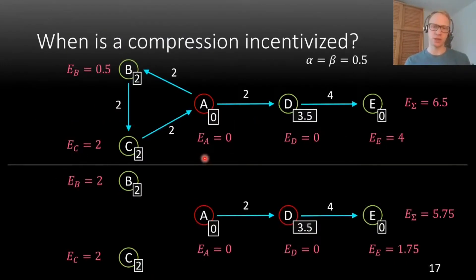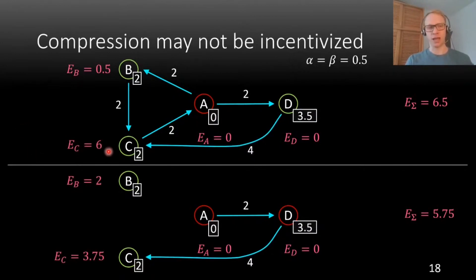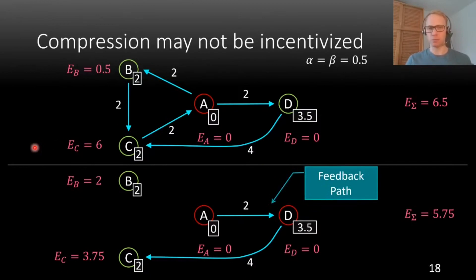Once more, going back to our example, we can use this insight to construct a financial system where compression is not incentivized. And what we do is we take this bank E that suffers from compression, and we take this bank C that is part of the compression but is indifferent, and we identify them to receive this financial system. Now, the equities here are just added up from before, and so bank C now has an equity of 6 before, after has an equity of 3.75, and so C would not agree to this compression and it's not incentivized. Interestingly, bank C would not agree at the cost of bank B, which actually has a lower equity here. So there's an interesting incentive misalignment here again. Of course, the feedback path we should now have is this one from A to D and back to C, which is the reason why C would be interested in actually supporting A and not compress.